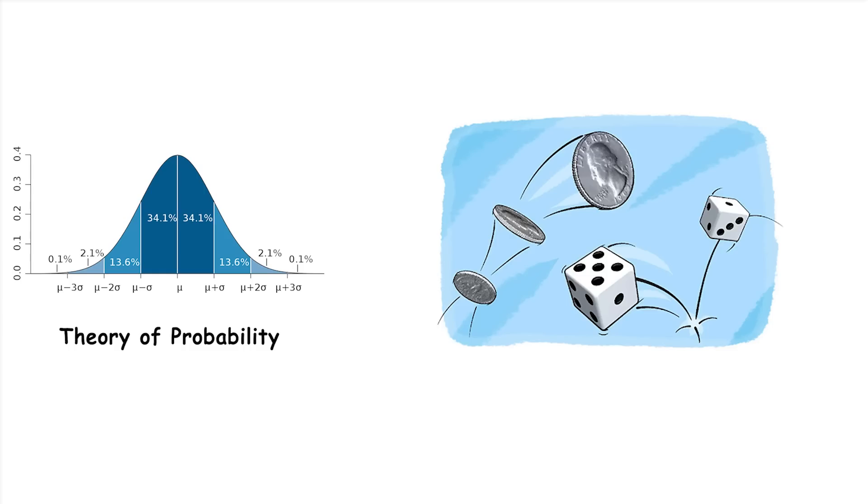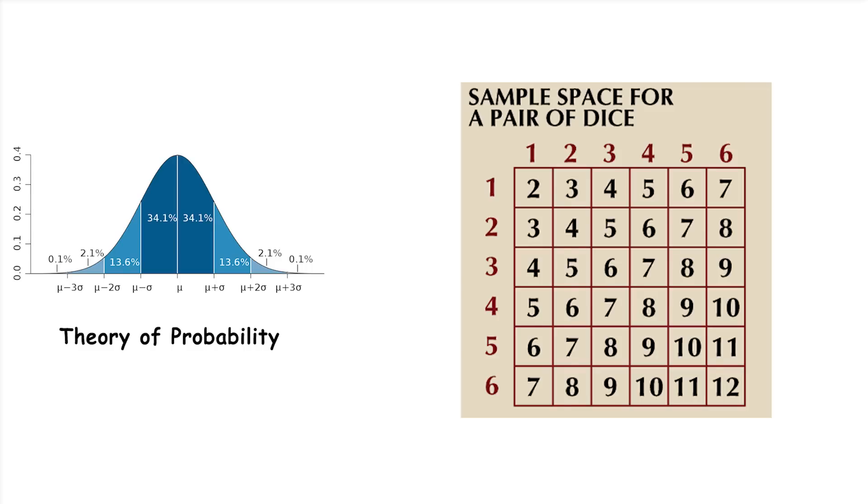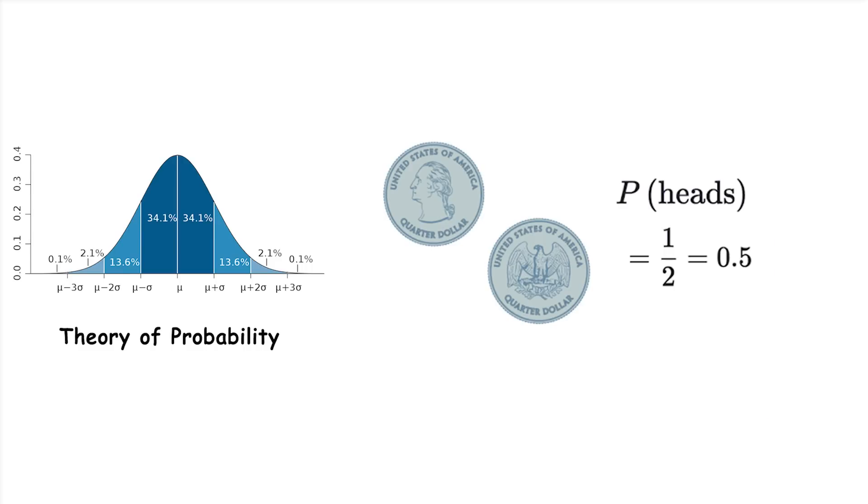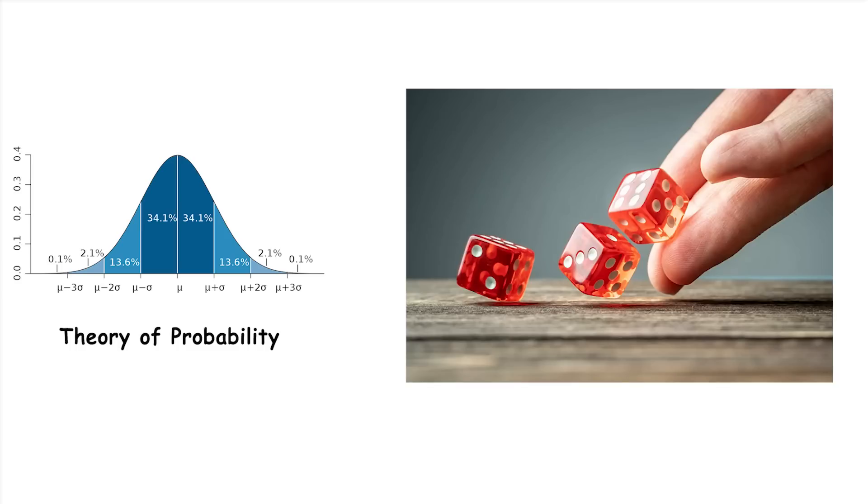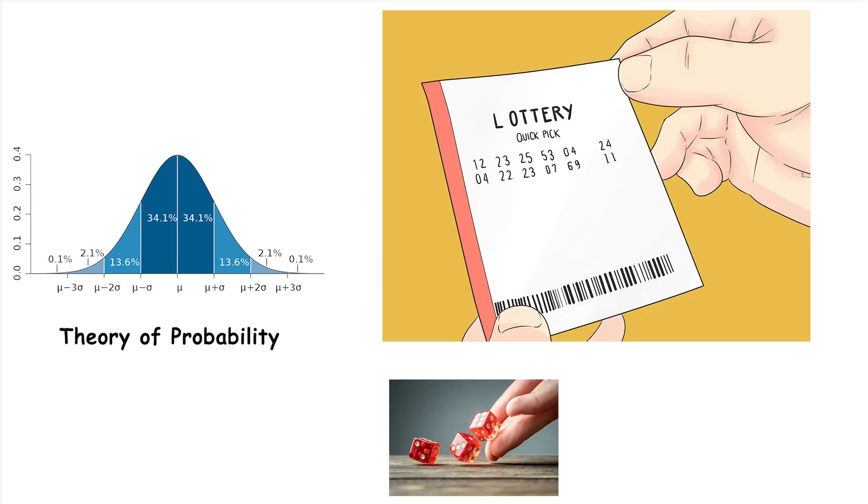Theory of probability. Probability is the study of how likely events are to happen. It measures the chance of an event occurring, ranging from zero, impossible, to one, certain. For instance, flipping a fair coin has a 50% chance of landing on heads. If you have a bag with one red ball and one blue ball, the probability of picking the red ball is one out of two, or 50%. Probability helps us predict how often something will happen, like the chances of rolling a six on a dice or picking a winning lottery number.